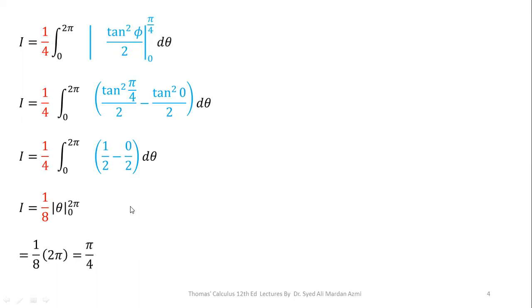In the next step, applying the fundamental theorem of calculus, upper limit minus lower limit, I have 2 pi minus 0 which is equal to 2 pi. Making the simplification, it becomes pi by 4.